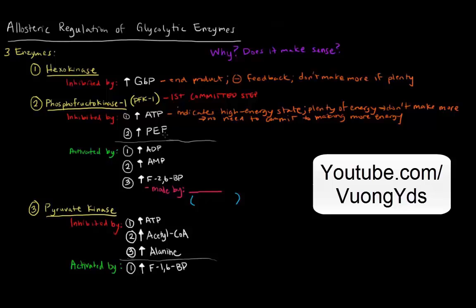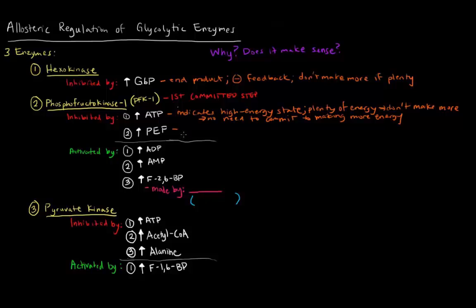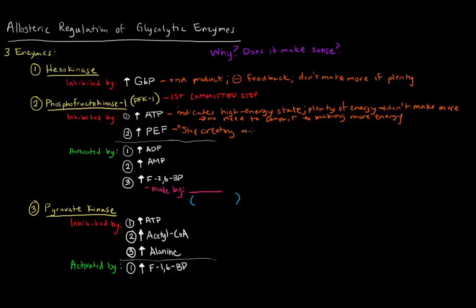High levels of phosphoenolpyruvate, or PEP, also inhibit phosphofructokinase. PEP comes later in the pathway of glycolysis, and if there's a buildup of it, that probably means the step from PEP via pyruvate kinase to pyruvate is not happening. If that's not happening, we don't want to keep creating PEP. So basically, PEP, if it builds up, will tell phosphofructokinase: don't make more of me. There's no need to make more of plenty.